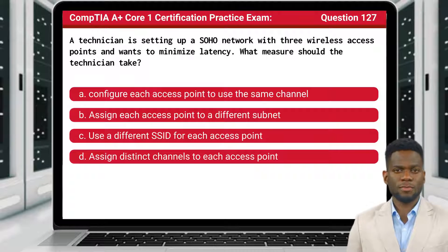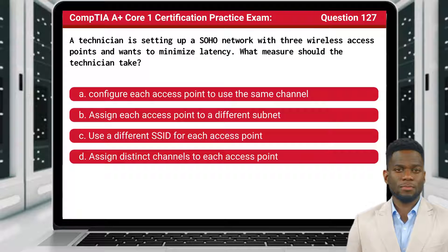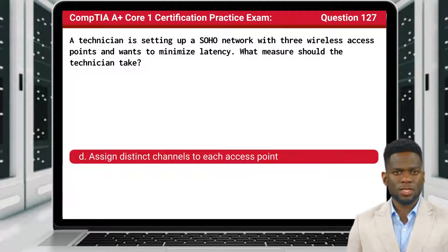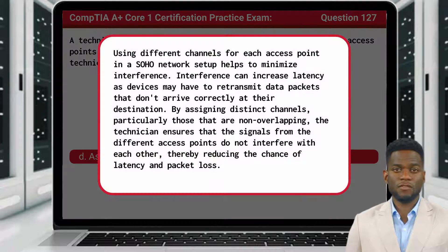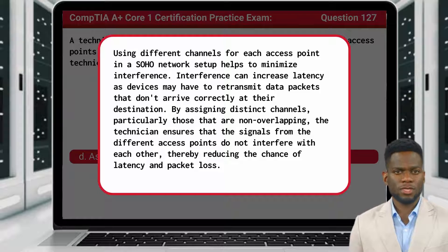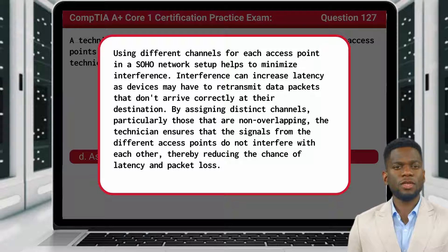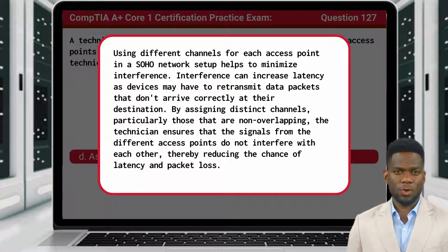Question 127: A technician is setting up a SOHO network with three wireless access points and wants to minimize latency. What measure should the technician take? The answer is D — Assign distinct channels to each access point. Using different channels for each access point in a SOHO network setup helps to minimize interference. Interference can increase latency, as devices may have to retransmit data packets that don't arrive correctly at their destination. By assigning distinct channels, particularly those that are non-overlapping, the technician ensures the signals from the different access points do not interfere with each other, thereby reducing the chance of latency and packet loss.